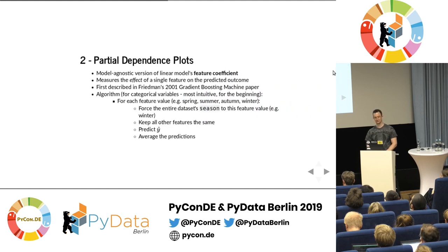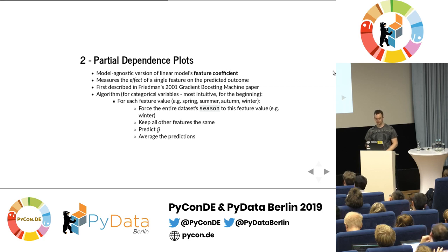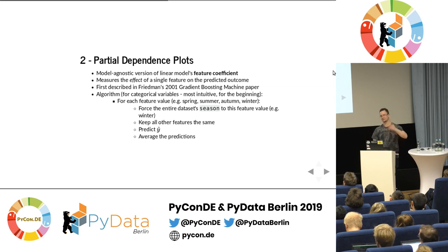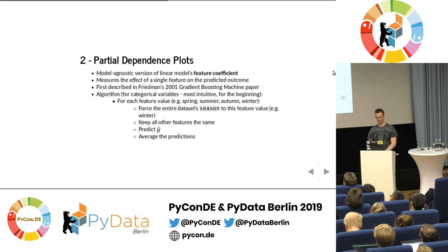The second problem — wanting to understand your model, not just get an accurate one, but understand the contributions of features — is addressed by a graphical method called Partial Dependence Plots (PDP). They are similar to the feature coefficient of a linear model: the sign tells you if it's a positive or negative influence, and the absolute value tells you how large that influence is. Partial dependence plots were introduced by Friedman in the gradient boosting machine paper.